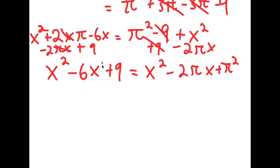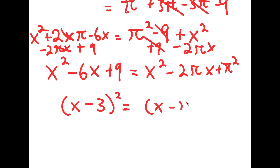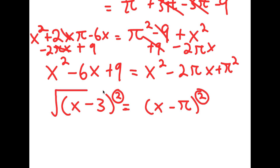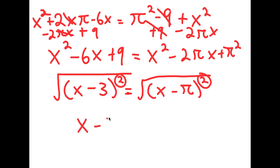So I have x squared minus 6x plus 9 is equal to x squared minus 2*pi*x plus pi squared. Now, x squared minus 6x plus 9 factors into (x minus 3) squared. And x squared minus 2*pi*x plus pi squared is the same thing as (x minus pi) squared. So I have (x minus 3) squared is equal to (x minus pi) squared. I want to cancel these two squares, so I take the square root on both sides. The square root of (x minus 3) squared is x minus 3, and the square root of (x minus pi) squared is x minus pi.